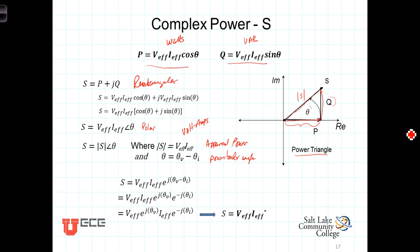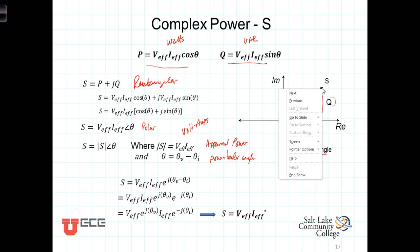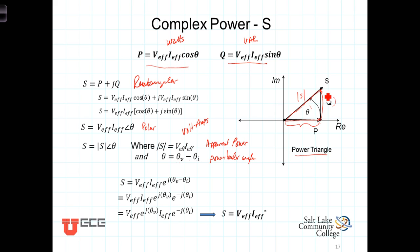Thus the apparent power is the amount of power the load requires in order to produce P watts of average power out of the system. For example, with a 5-horsepower motor, the power converted from electrical to mechanical would be P. But if the current and voltage are not in phase, in order to get that much average power you would need to provide the magnitude of S volt-amps to get P. S then becomes an indicator of the efficiency of the circuit. In its best form, the circuit operates where theta I equals theta V, and the apparent power equals the average power.